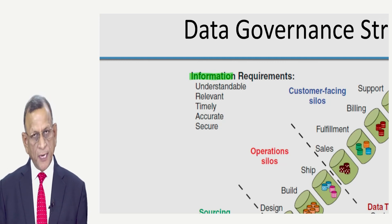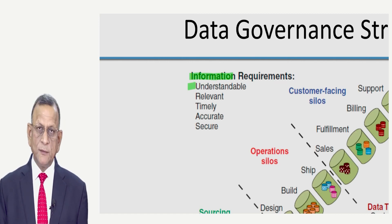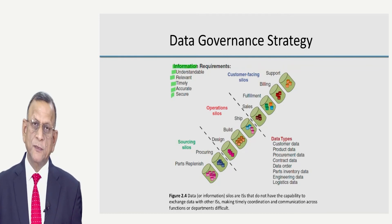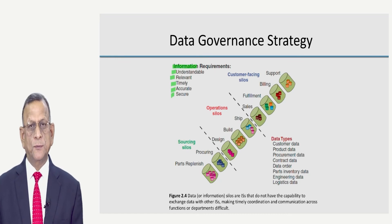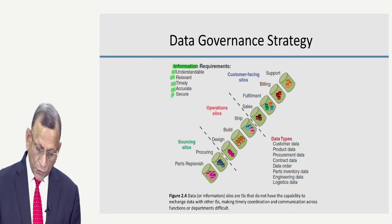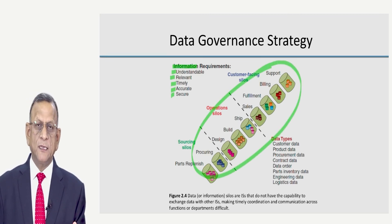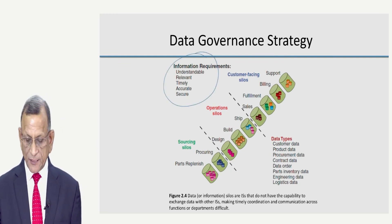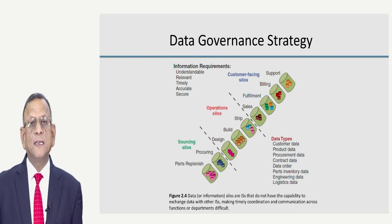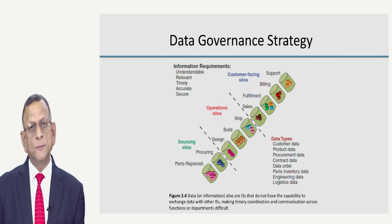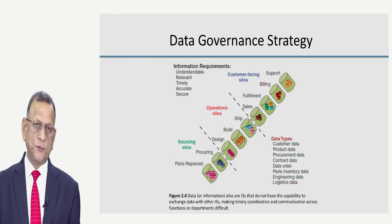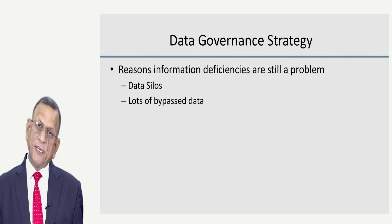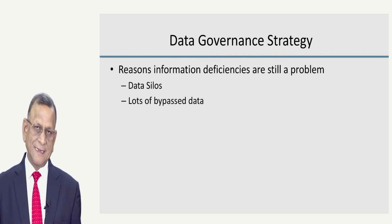What kind of information is required? It should be understandable, relevant, timely, accurate, and secure. If the information is not understandable, relevant, timely, accurate, or secure, it will be of no use. This is Figure 2.4, which helps us understand the impact of silos on an organization. Working in silos means we will not be able to come to a conclusion, and data deficiency will lead to a poor customer experience.